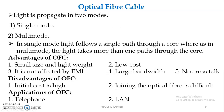Light is propagated in two modes: single mode or multimode. In single mode, light follows a single path through the core. In multimode, light takes more than one path through the core. Advantages of OFC include small size and lightweight, low cost, immunity to electromagnetic interference, large bandwidth, and no crosstalk. Disadvantages include high initial design cost and difficulty in joining optical fibers. Applications include telephone lines and inland networks.